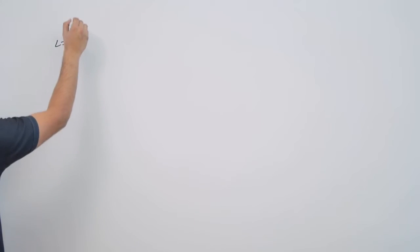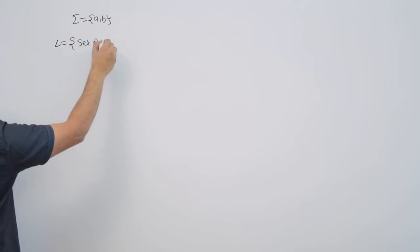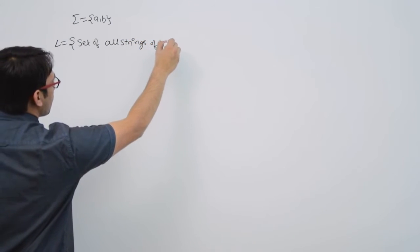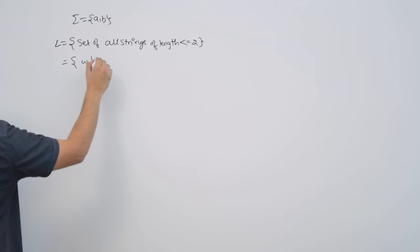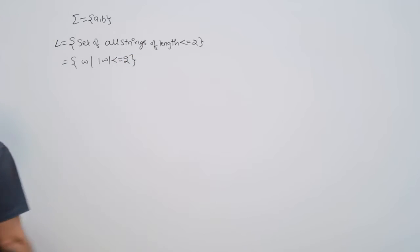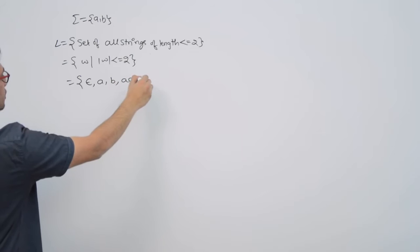Let us take a few more examples of languages and try to represent regular expressions for those languages. Assume the language L over Σ = {a, b} is the set of all strings of length less than or equal to 2 — that is, w such that |w| ≤ 2. The strings in this language are: epsilon, a, b, aa, ab, ba, and bb.